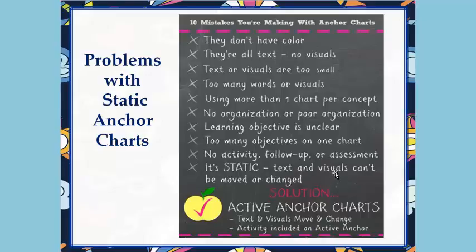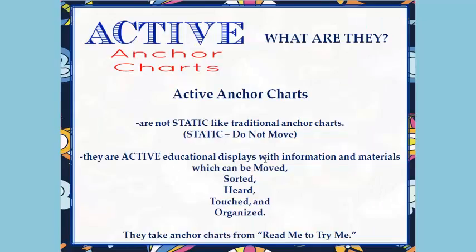So what's the solution? Active anchors. The text and visuals move and change, and there's an activity included on the active anchor itself. Here's a breakdown of some things you can do with an active anchor chart: the info can be moved, sorted, heard, touched, and organized. They really help your students move from reading the anchor to trying the anchor.